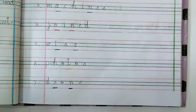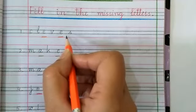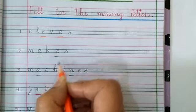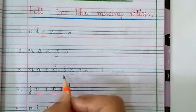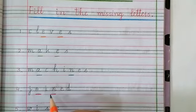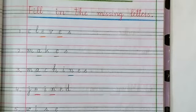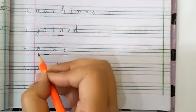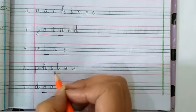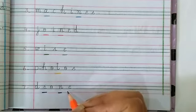We will begin to read this, class. C-L-E-V-E-R, clever. M-A-K-E-S, makes. M-A-C-H-I-N-E-S, machines. J-O-I-N-E-D, joined. Go to the next word. W-I-E-R-E. P-H-O-T-O-S, photos. D-R-O-N-E, drone.